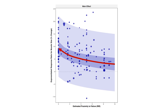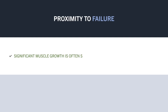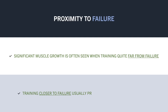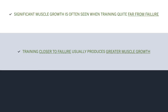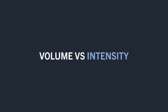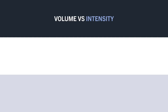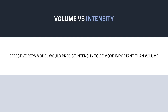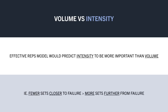Taking all these analyses together, the exact relationship isn't really clear, although what is consistent between them is twofold. First, significant muscle growth can certainly occur when training quite far from failure, as much as 10 reps in reserve. And second, training closer to failure tends to result in superior muscle growth to some extent. Another area we can look into is the influence of volume versus intensity on muscle growth. If the effective reps model were true, we would expect intensity to be more important than volume, meaning training closer to failure with fewer sets would be more effective than training further from failure with more sets.